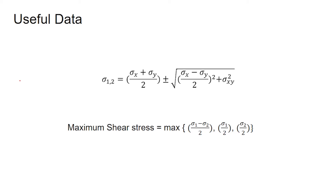In our case, it is given that the minimum principal stress is 10, that is σ2 = 10 kPa. We do not know σ1. The next point is: maximum shear stress equals the maximum of (σ1 − σ2)/2, σ1/2, σ2/2. The maximum shear stress will be the maximum of these three.